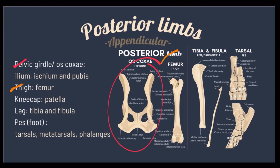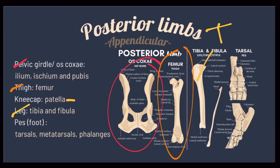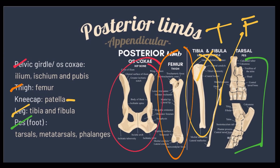The thigh bone is the femur. The kneecap or the patella is the largest sesamoid bone. Next is the leg — the tibia and the fibula. And the pes or the foot comprises the tarsals, metatarsals, and phalanges.